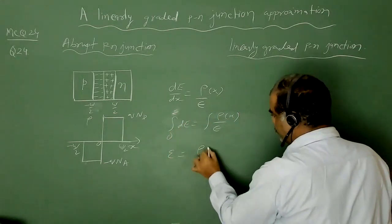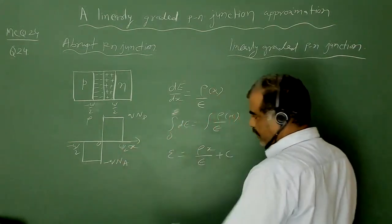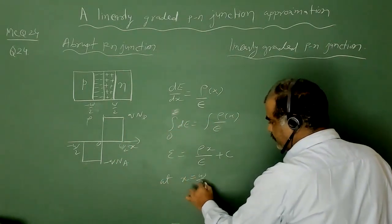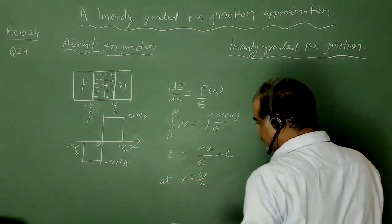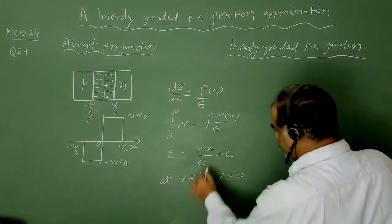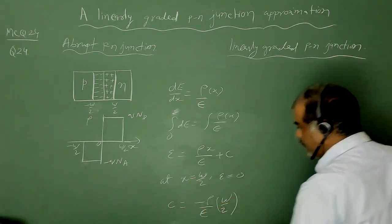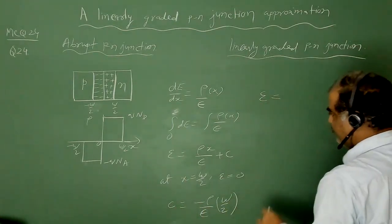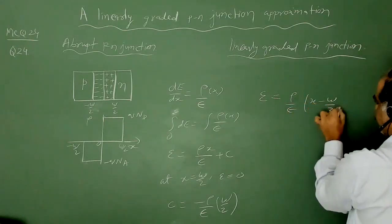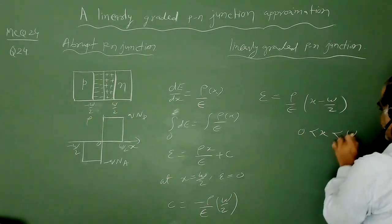Integrating gives the electric field as E = (ρ/ε)x + constant. Now if I apply boundary conditions: at x = +W/2, charge density becomes essentially zero, so the electric field will be zero. Applying this boundary condition gives me C = −(ρ/ε)(W/2). So the electric field value comes out as E = (ρ/ε)(x − W/2) for the region 0 to W/2.